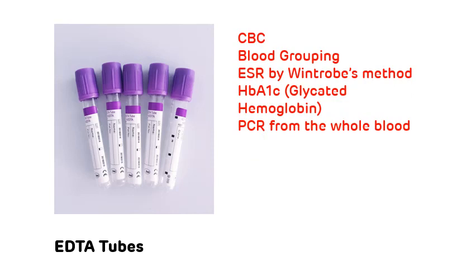The second use of the EDTA tube is blood grouping. Third, you can also do ESR by the Wintrobe method. The fourth use is HbA1c, that is glycated hemoglobin, and you can also do CRP from the EDTA tube. So these are the various uses of the EDTA tube.